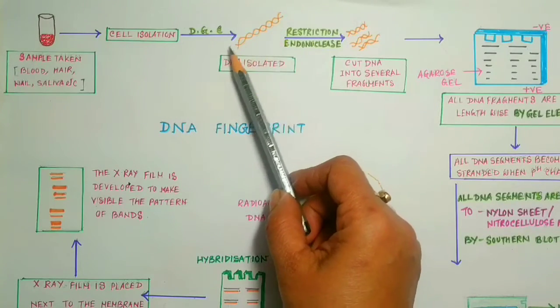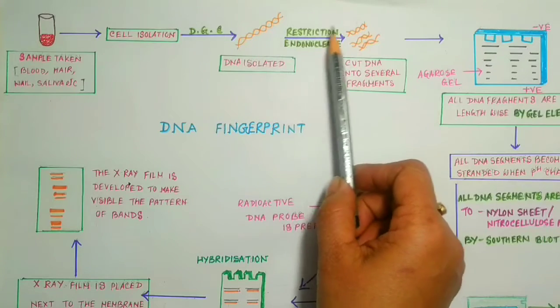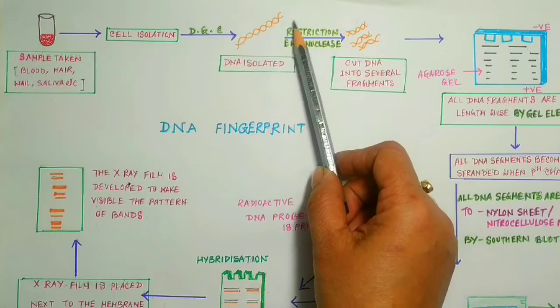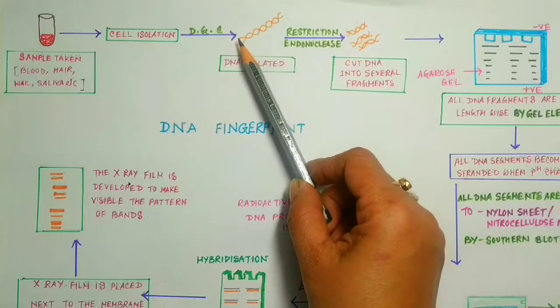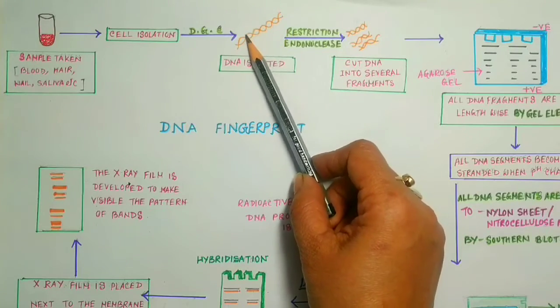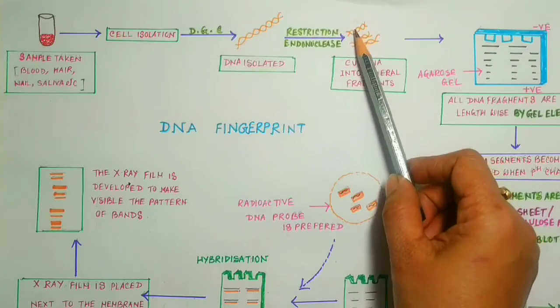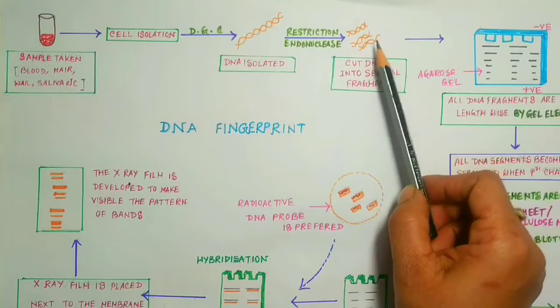This is the long strand of DNA. Then with the help of restriction endonuclease, means molecular scissors, this long fragment of DNA is cut into different several pieces of different lengths.